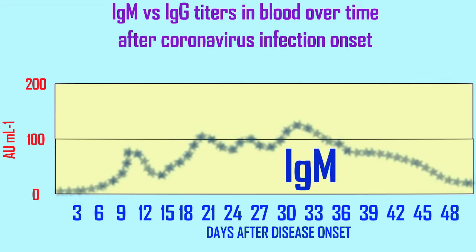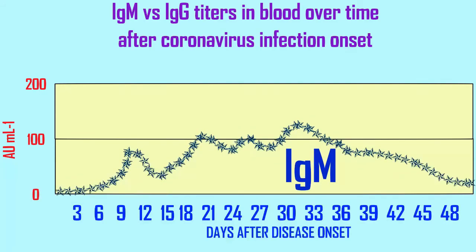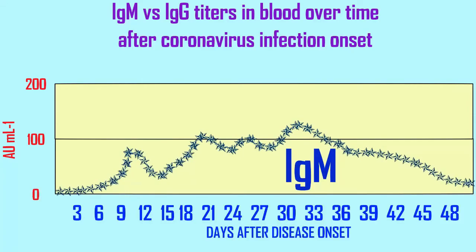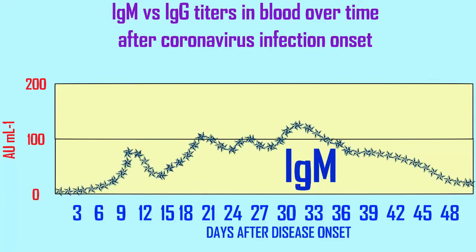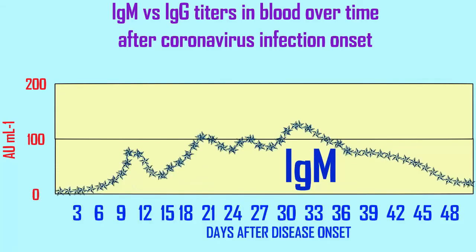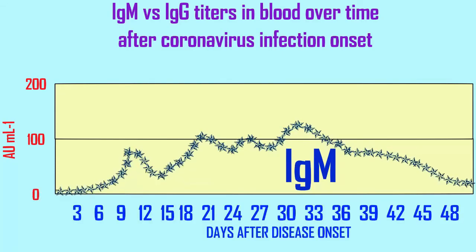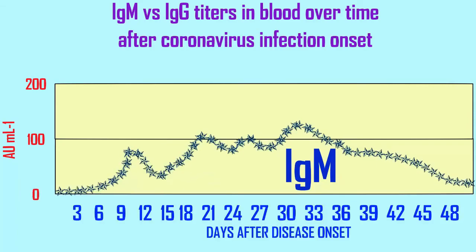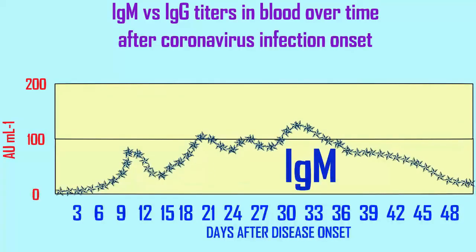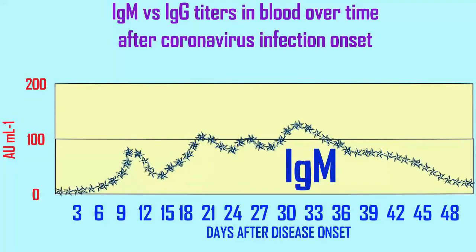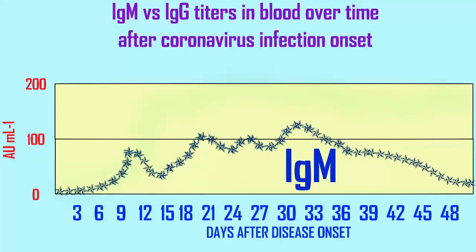IgM is the first of the antibodies produced and it peaks early within the first month, after which it declines to background levels. In the first month one might be producing both IgM and IgG antibodies, and this would show a recent infection.